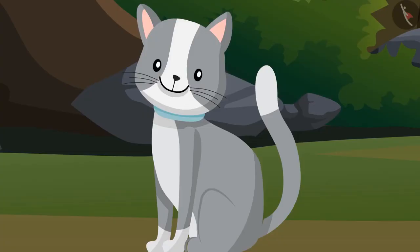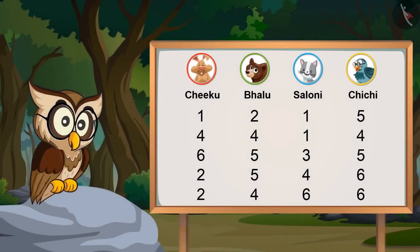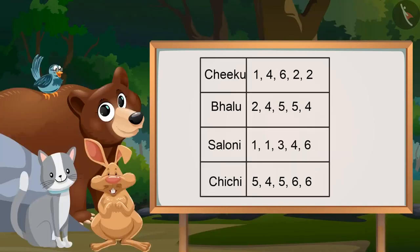Can you give one more example of data? Yes, of course. See, if I want to know how many members are there in your family, I can make a list by asking you all the number of members in each of your families. By looking at this list we can easily find out whose family has the most members and whose family has the least. But if we closely look at this data, can you tell which number hit the dice most of the times?